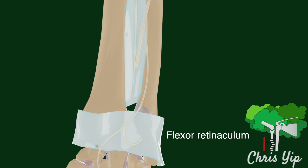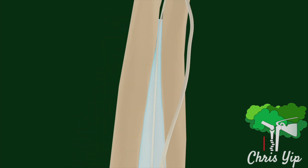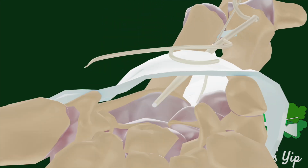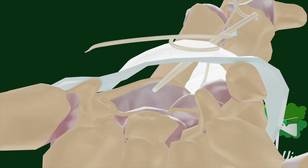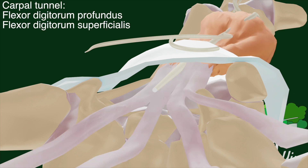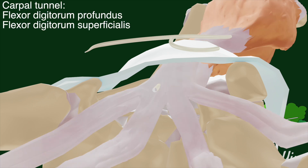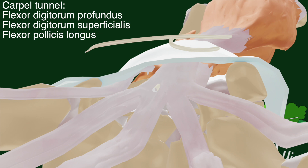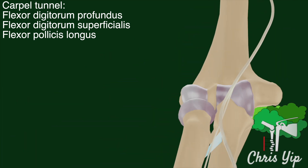The main median nerve continues to the hand by traveling under the flexor retinaculum, which is a tight space that also contains the tendons for the flexor digitorum profundus and superficialis, and the tendons for the flexor pollicis longus.